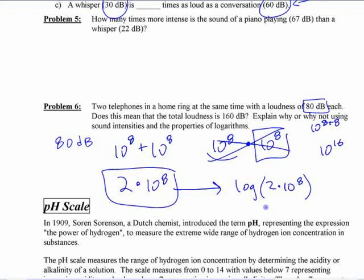The logarithm of that is 8.3 or something like that, right? Remember, 2 times 10 to the 8th is a bit more than 1 times 10 to the 8th, so it's going to be a little bit more than 8th. It's 8.3 or something like that, I think. So it's roughly – is that right? It's roughly 83 decibels. Two phones together that are each 80 are going to be 83.